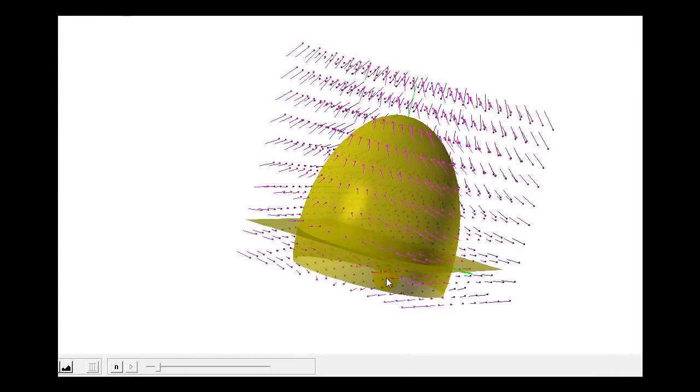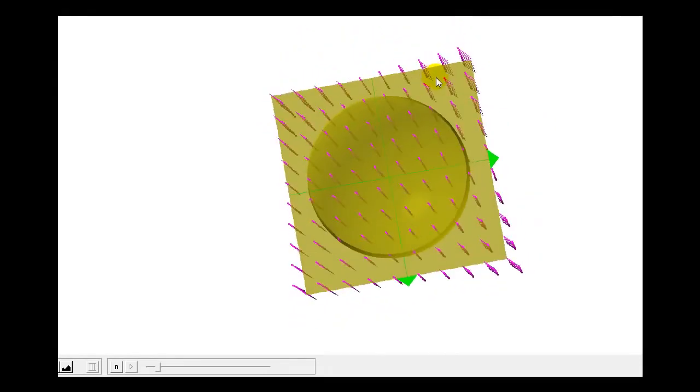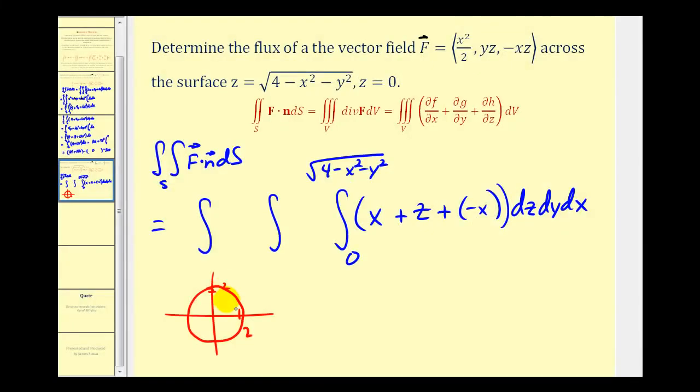We can see that visually by rotating this graph. I think we'll end up converting this to cylindrical coordinates. Let's set this up using rectangular coordinates first.